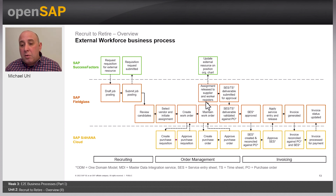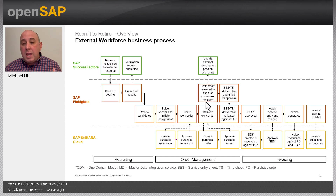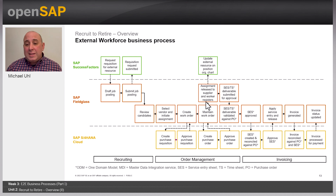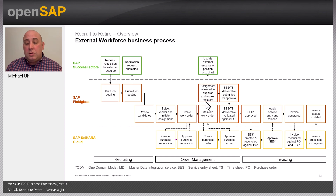As time goes on and operations happen, deliverables can be submitted within Fieldglass. We then move to the last phase: invoicing. There are automated invoicing integrations so the worker and suppliers can get paid timely. All your financials are easily managed from a budget and billing payment perspective. This end-to-end approach gives you a great picture of how Fieldglass can help you obtain the right staff, get your projects done in the right amount of time, and ultimately provides full visibility into your total workforce.